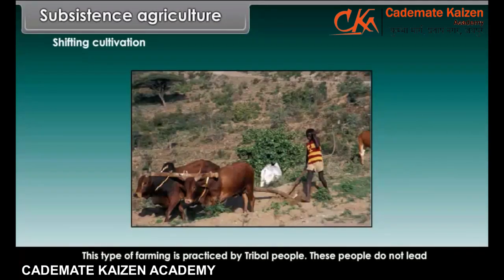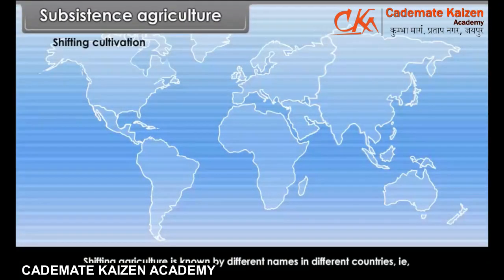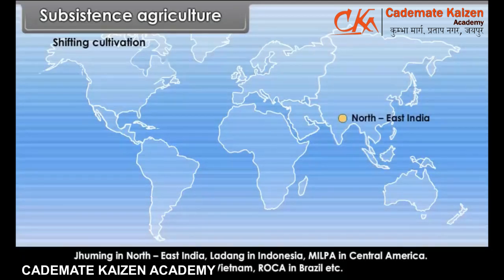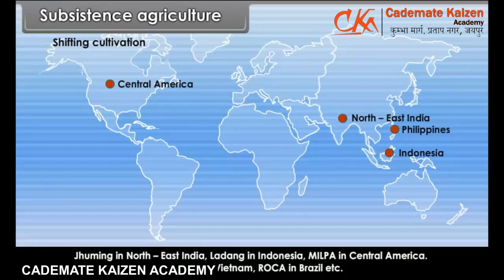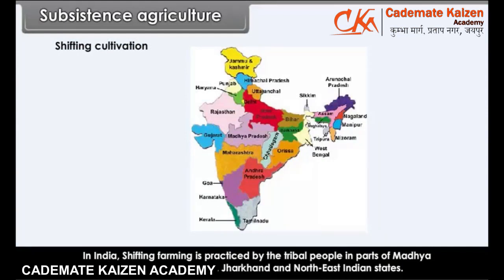This type of farming is practiced by tribal people who do not lead a settled life. The land is prepared for cultivation by felling trees and burning them. Shifting agriculture is known by different names in different countries. In India, shifting farming is practiced by tribal people in parts of Madhya Pradesh, Chhattisgarh, Orissa, Jharkhand and North East Indian states.